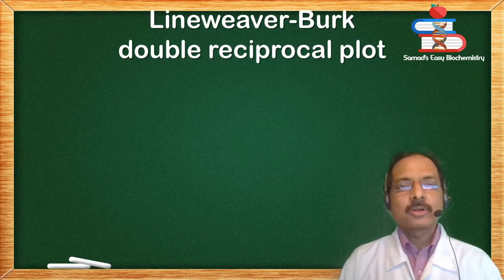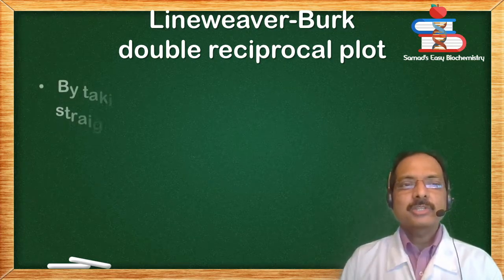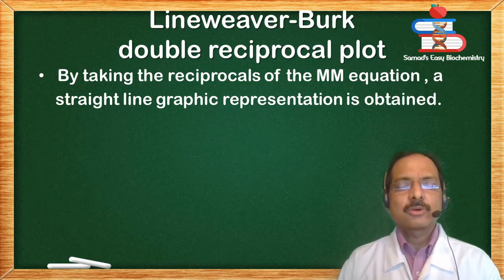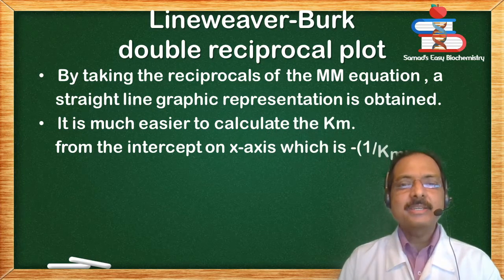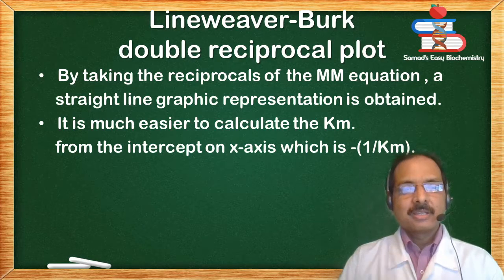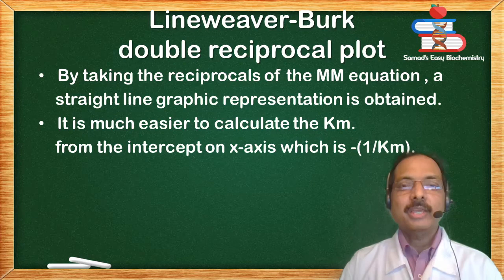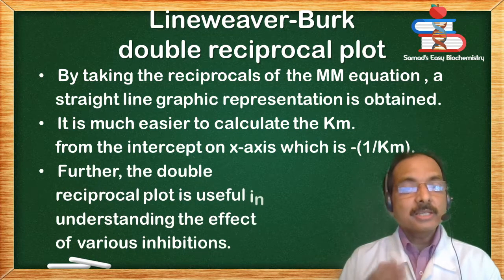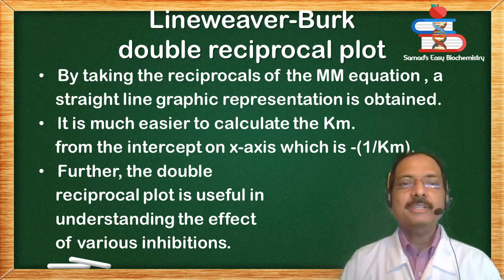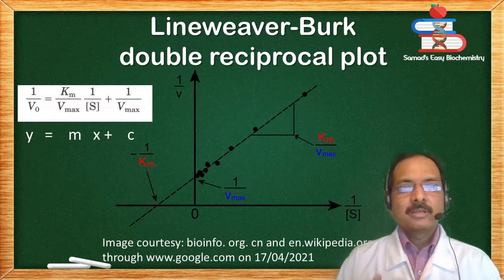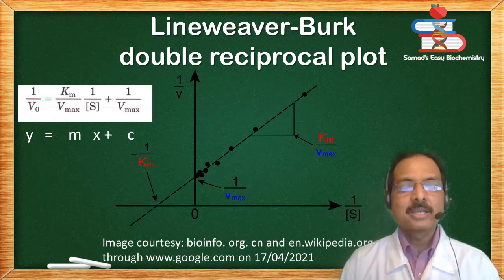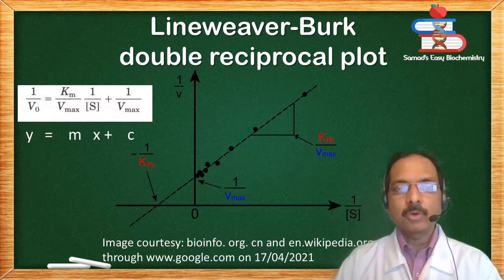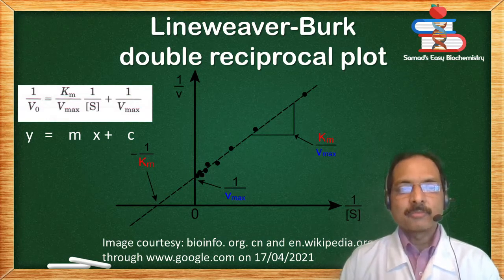Lineweaver-Burk plot or double reciprocal plot: the Michaelis-Menten equation is treated by taking reciprocals, and a straight-line graphic representation is obtained. It is much easier to calculate the Km from such plots, which forms the intercept on the x-axis, which is minus 1 upon Km. The double reciprocal plot is also useful in understanding the effect of various inhibitors. The double reciprocal equation is: 1/V₀ = (Km/Vmax) × (1/[S]) + 1/Vmax. The equation resembles the straight-line graph Y = Mx + C, where M is the slope and C is the intercept. On the Lineweaver-Burk plot, the x-axis intercept is −1/Km, from which Km can be calculated.